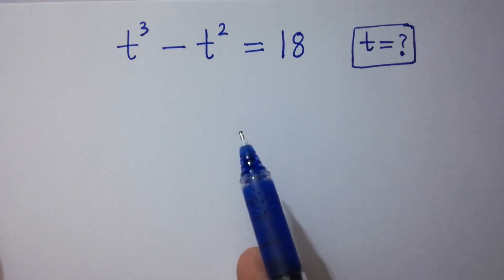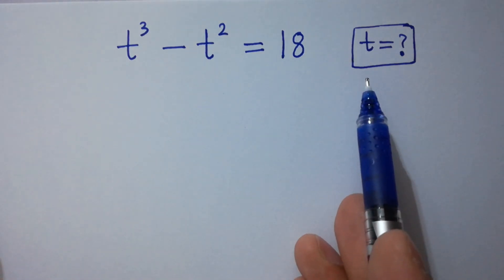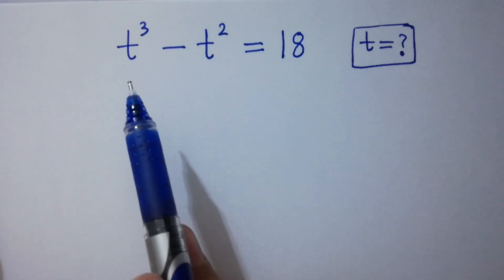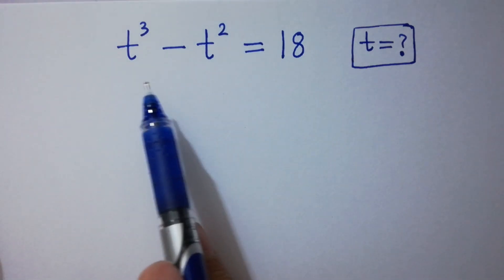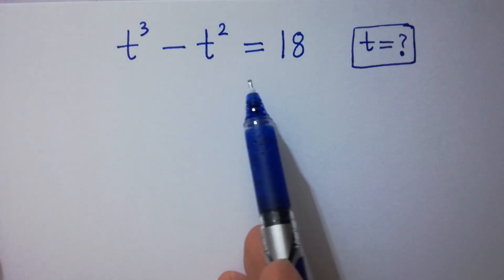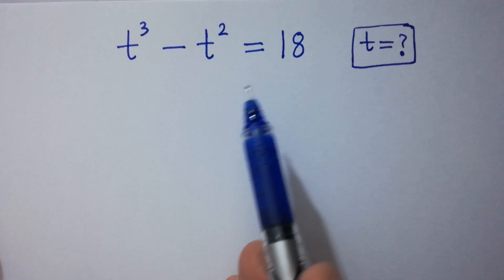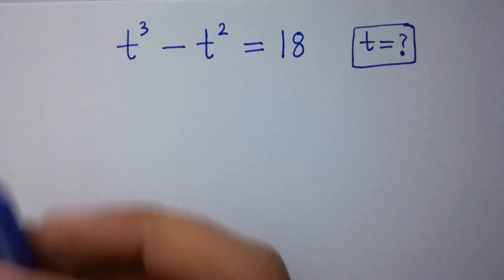Hello friends. Find the value of t if t cubed minus t squared equals 18. Let's have a solution.